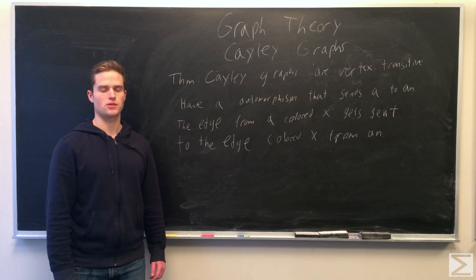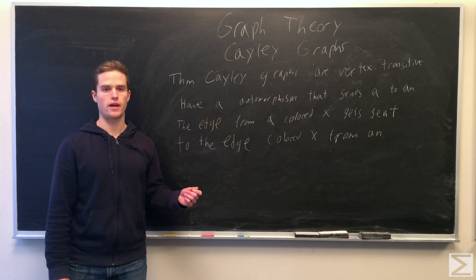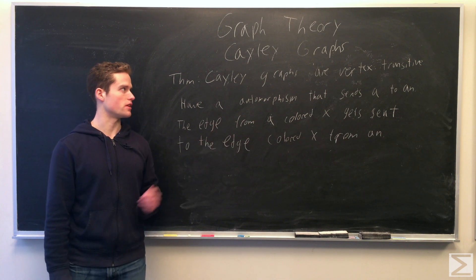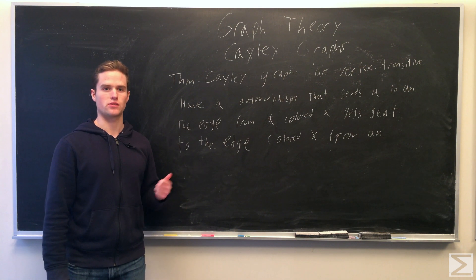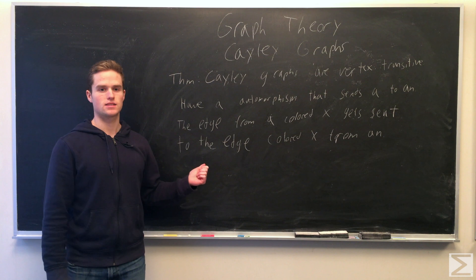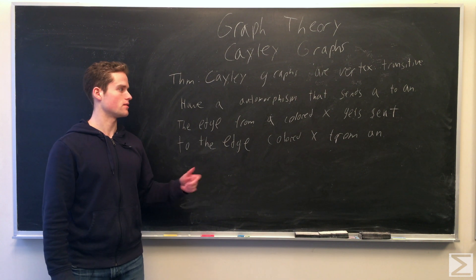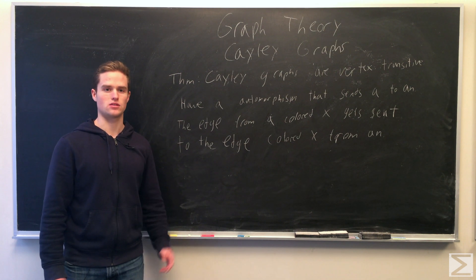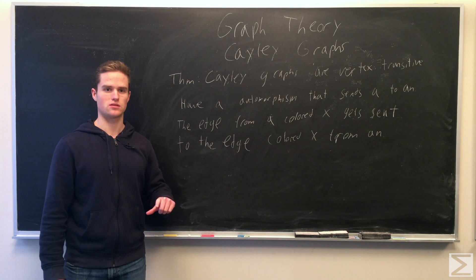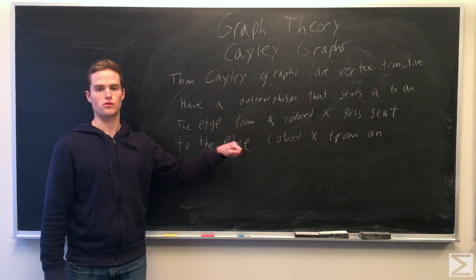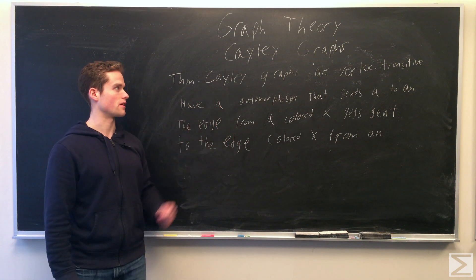So we can show that Cayley graphs are vertex transitive. We have an automorphism that sends A to AN, where N is any member of our group G. A gets sent to AN. This is bijective between the vertices. Any edge X from A gets sent to an edge X from AN. This is also bijective between all the edges and preserves incidence. As N goes through the elements of G, we can send our vertex A to any other element we want. So the Cayley graph is vertex transitive.